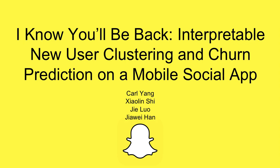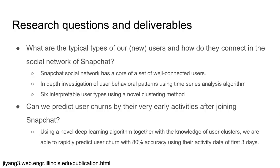Interpretable new user clustering and churn prediction on a mobile social app. In this work, based on anonymous data from Snapchat, we aim to jointly answer two research questions: What are the typical types of users and how do they connect in the social app? Also, can we predict user churn by their very early activities after joining a social app?